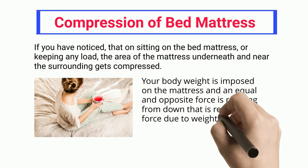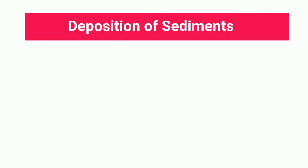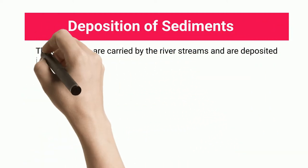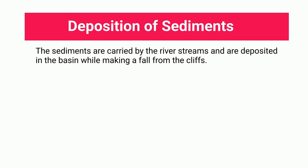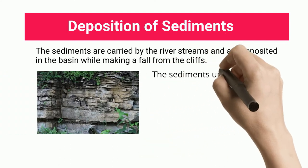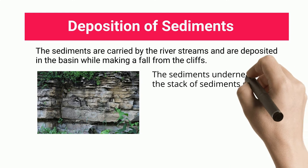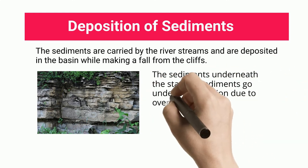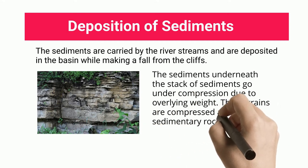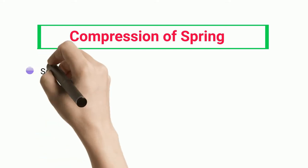Deposition of sediments: sediments carried by river streams are deposited in the basin. When falling from cliffs, the sediments underneath the stack go under compression due to overlying weight. These grains are compressed and sedimentary rocks are formed.